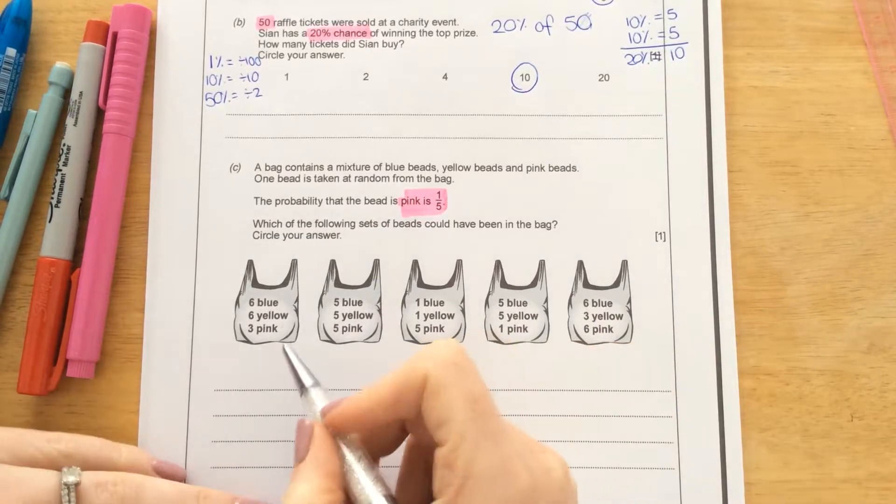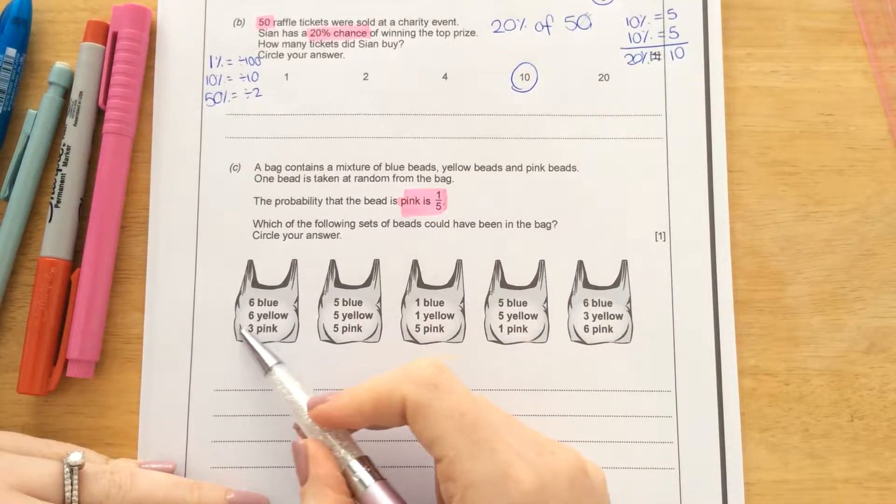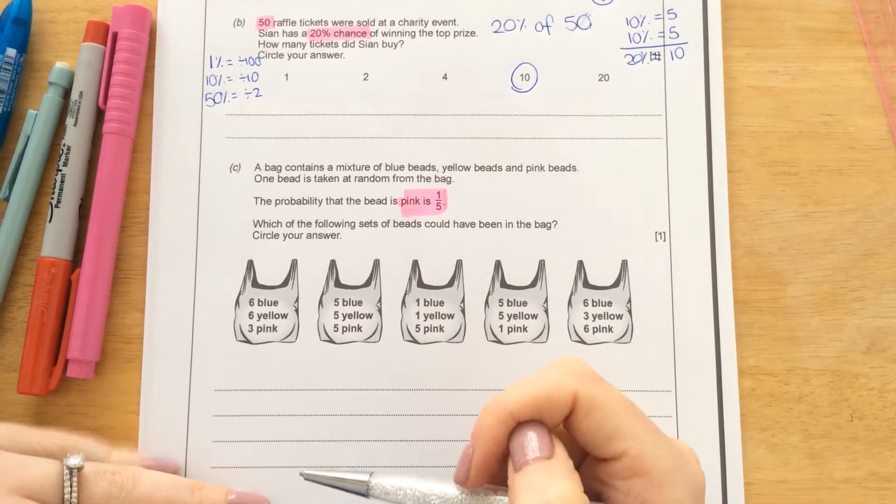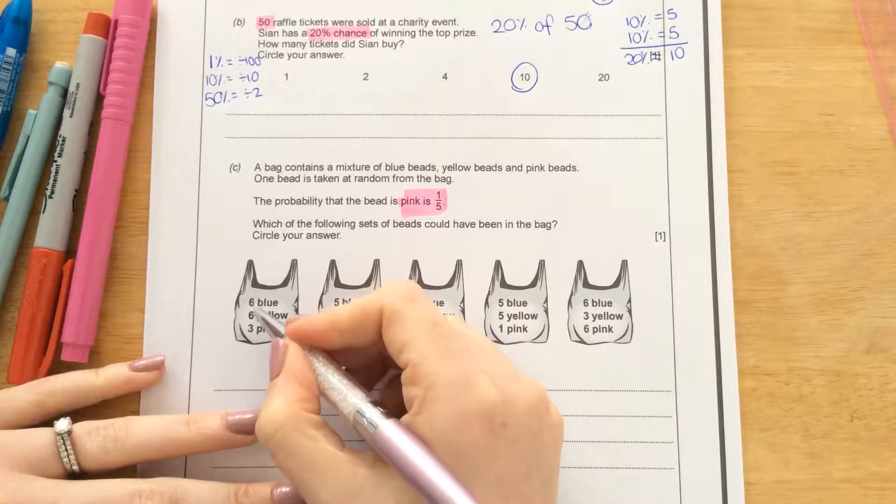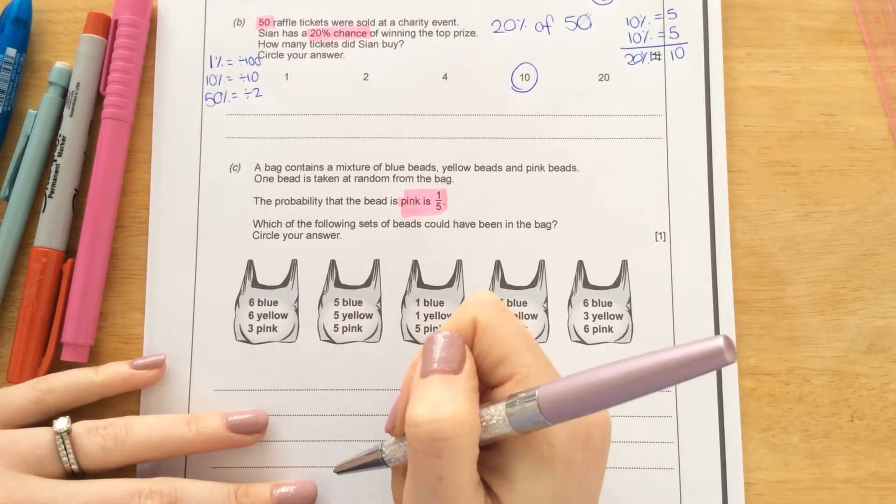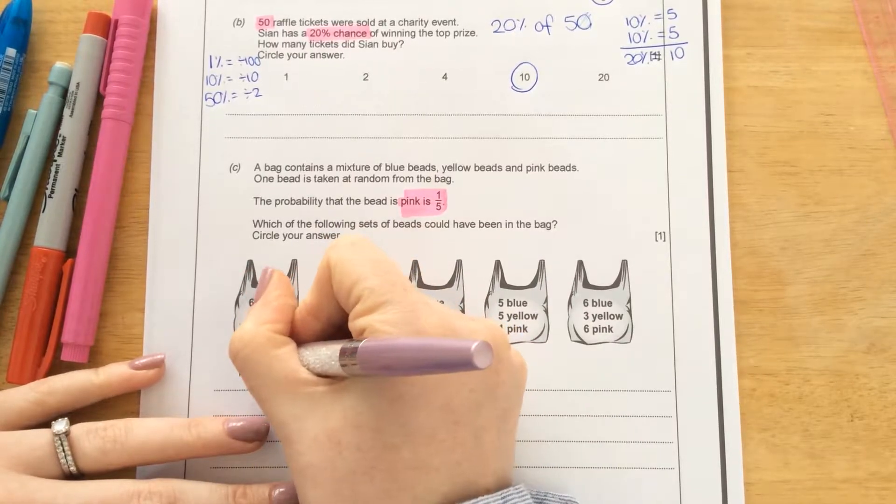So we have to figure out which one of these bags, the pink, is 1 fifth of the total amount. So we're going to work out the total amount in the bag. 6 blue, 6 yellow, and 3 pink. So that's 15 beads in total.